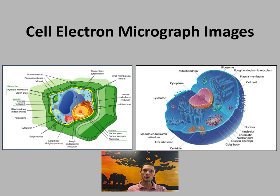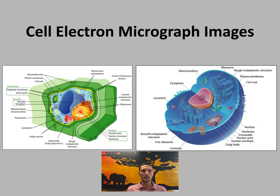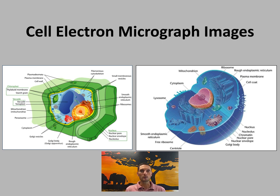Depending on your class, you may be able to look at different organelles of plant or animal cells under a microscope. Ideally you want to view organelles as electron micrograph images because they are much more detailed. If you are not doing this in class, Google searching or using your textbook to identify different organelles is recommended.